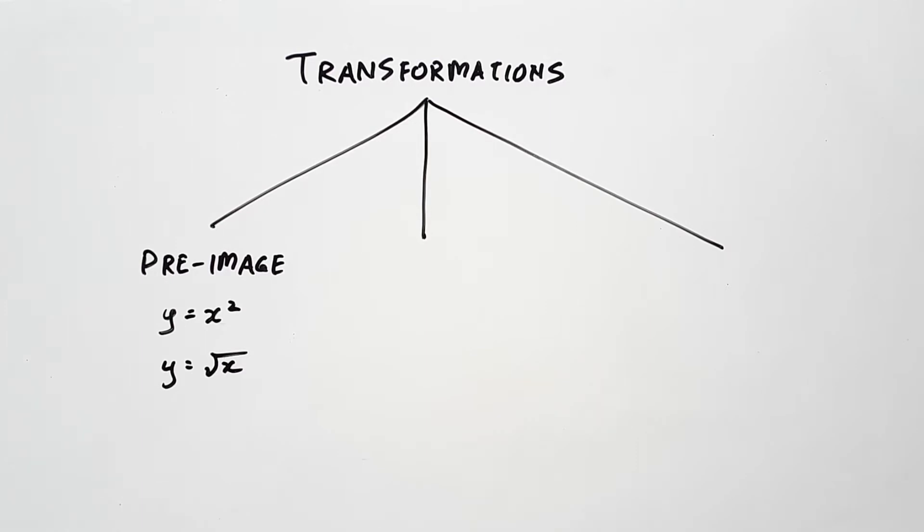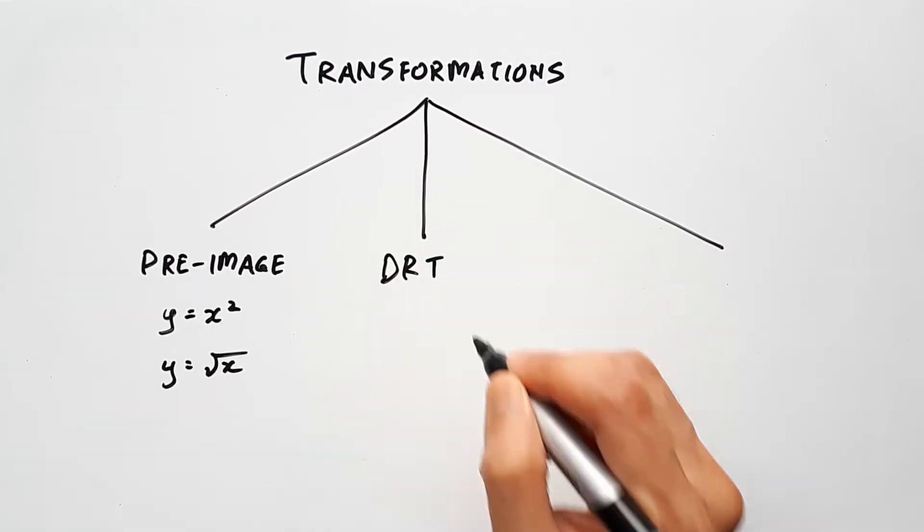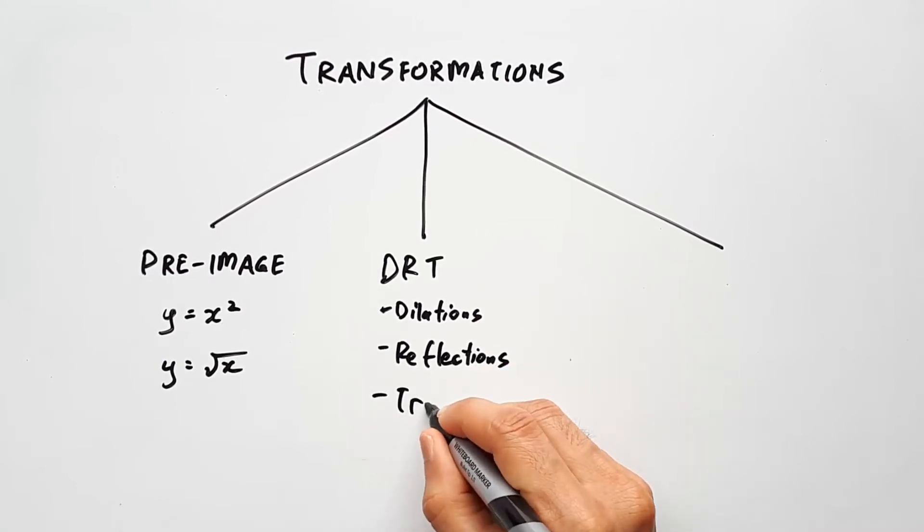You then have the transformations, usually in the sequence of DRT, also known as dilations, reflections, and translations.